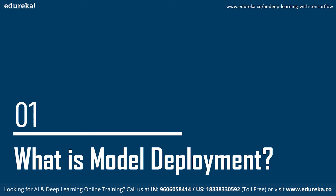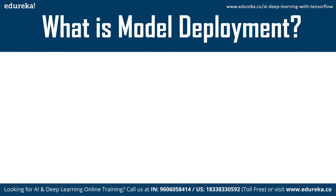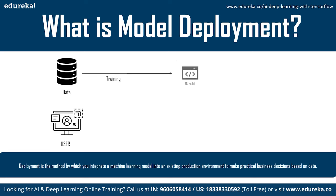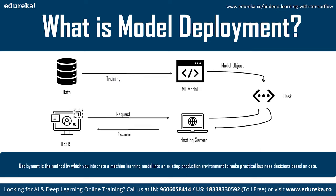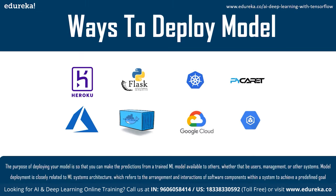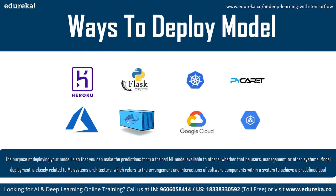So what is meant by deploying a model? Deployment is a method by which you integrate a machine learning model into an existing production environment to make practical business decisions based on the data. It is one of the last stages in the machine learning lifecycle and can sometimes be a tedious job. Some of the popular platforms for deployment are Google Cloud Platform, Heroku, AWS Lambda, Microsoft Azure, and many more.